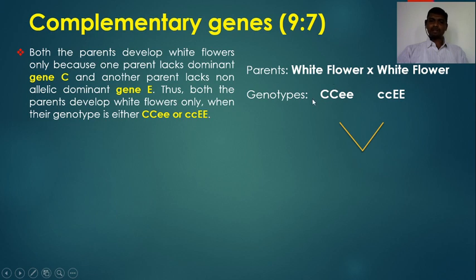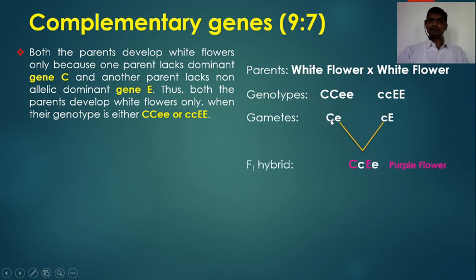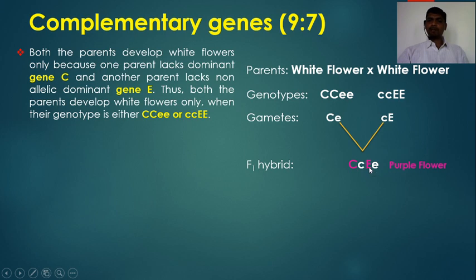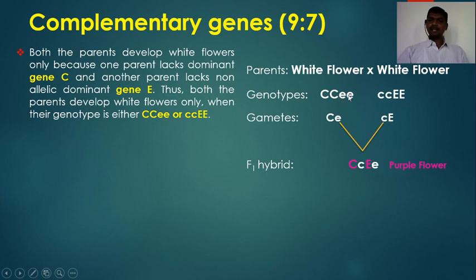When the white-flowered parents are crossed, the gamete from the first parent is capital C, small e, and from the other parent small c, capital E. These gametes fuse in fertilization to produce the F1 hybrid with genotype capital C, small c, capital E, small e. The resulting phenotype is purple flower, because both dominant non-allelic genes C and E are present in the F1 hybrid.